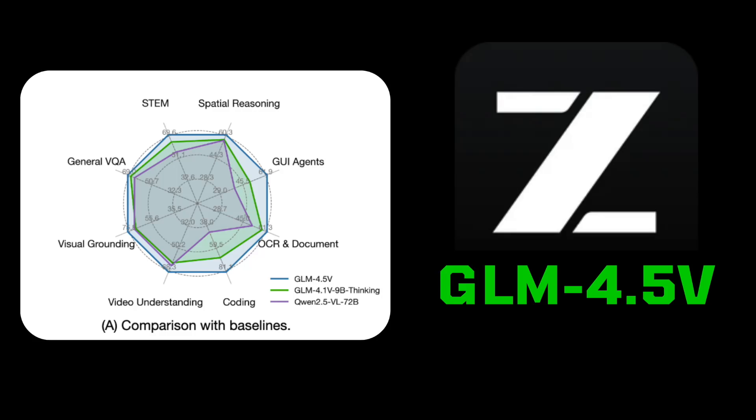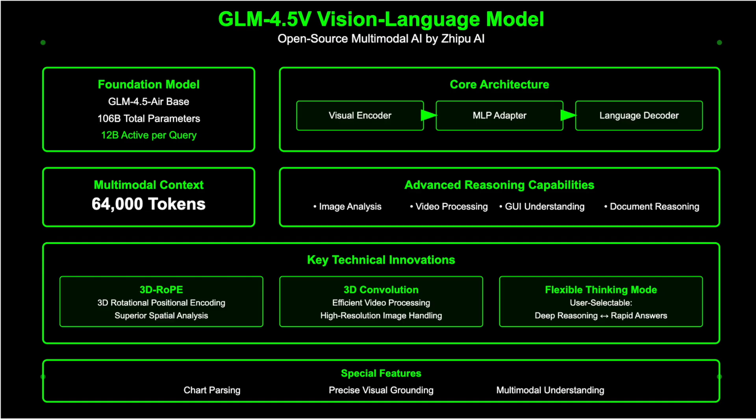Zippo AI releases GLM 4.5V, a cutting-edge open-source vision language model built on the 106 billion parameter GLM 4.5 Air Foundation, with 12 billion parameters active per query for high efficiency and strong real-world performance.